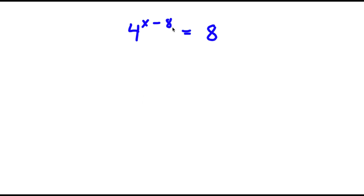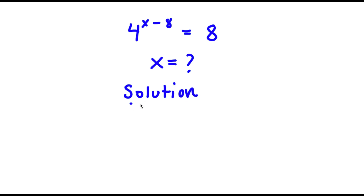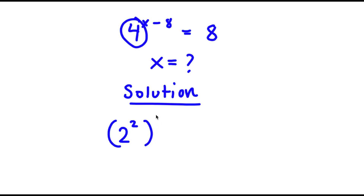In this problem, I have 4 to the power of (x minus 8) is equal to 8. To solve this, I'm going to first start by rewriting 4 as 2 squared. So now I have 2 squared to the power of (x minus 8) is equal to 8.